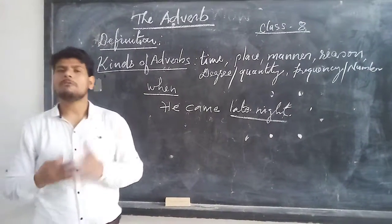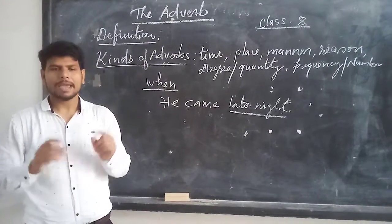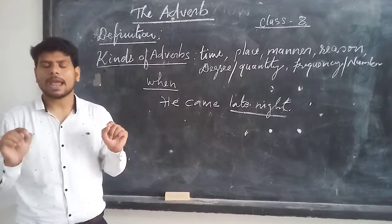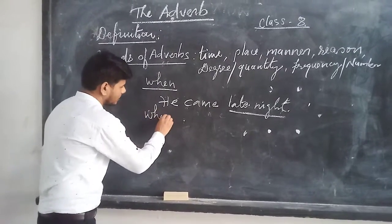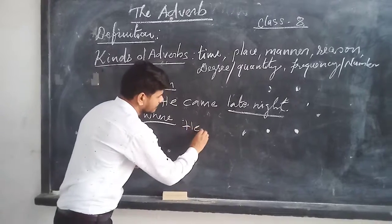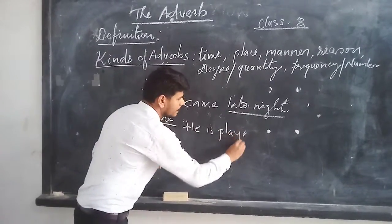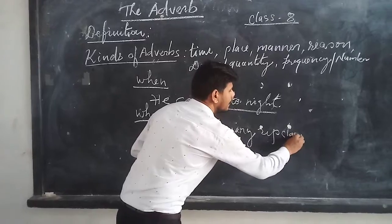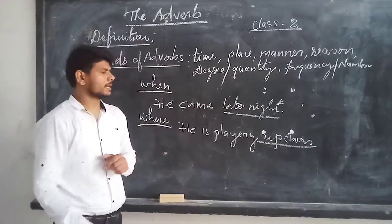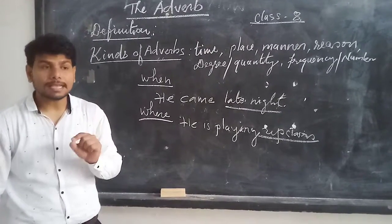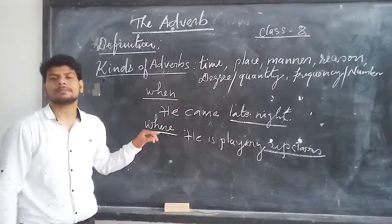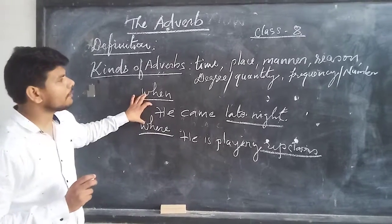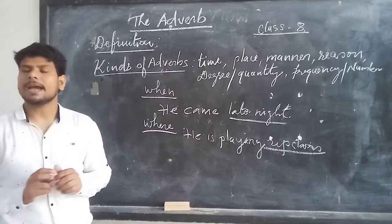The next part is adverb of place. The adverb of place is the adverb which talks about where the action was performed or where the action has taken place. For example, he is playing upstairs. Upstairs is an adverb which tells us where the action has been taken or where the action was placed.